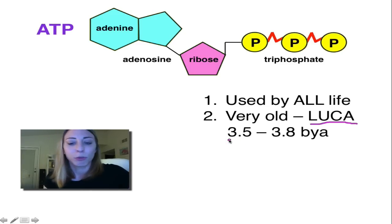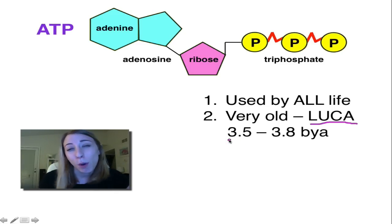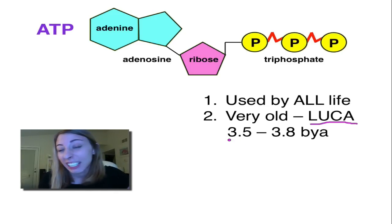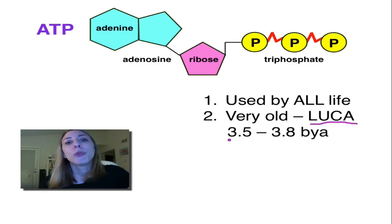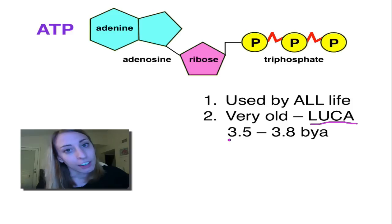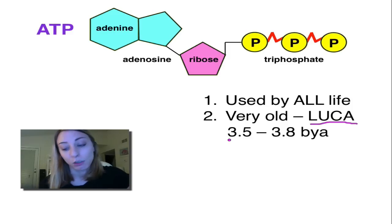LUCA, which existed from 3.5 to 3.8 billion years ago, actually used ATP to fund reactions in those cells.